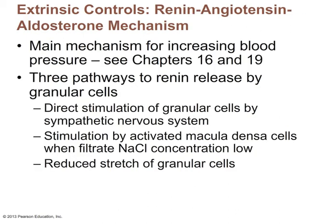The second extrinsic control involves the renin-angiotensin-aldosterone system. Renin is an enzyme that helps convert angiotensinogen into angiotensin-1 and then angiotensin-2. Angiotensin-2 causes constriction of blood vessels, raising blood pressure but also reducing blood flow through the glomerulus and reducing filtration rate. This mechanism is complex and will be covered on the exam.